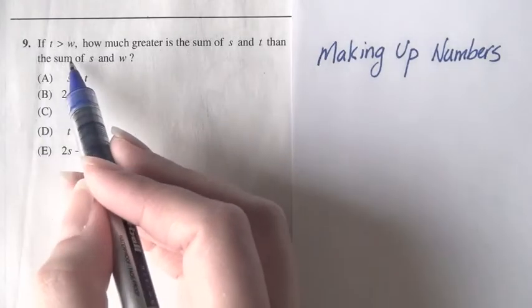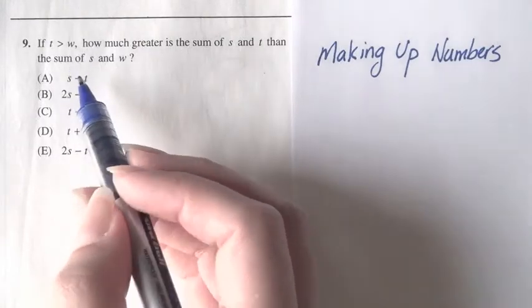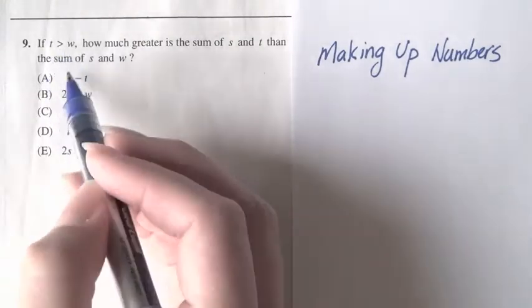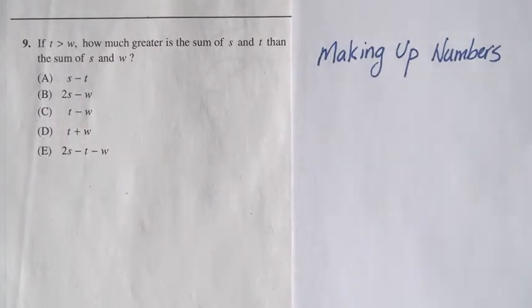Because looking at this problem, the only stipulations on the variables s, t, and w are that t is greater than w, and then s could be truly anything. So, because there are lots of options for what the variables could be, we'll make up numbers.